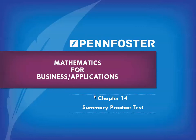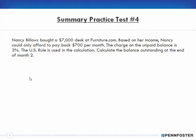Welcome back, students taking Math for Business and Finance and Math Applications. We're doing the Chapter 14 summary practice test and we only have two problems left: number four and number five. Number four: Nancy Billows bought a $7,000 desk at furniture.com. Based on her income, Nancy can afford to pay back $700 per month. The charge on the unpaid balance is three percent. The US rule is used in the calculation.